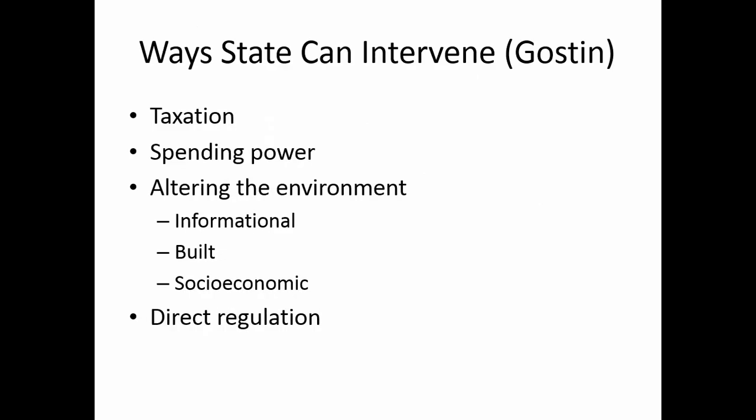Gostin has developed a taxonomy of ways in which the state can choose to intervene in attempting to protect and promote public health. These are useful in that we tend to think of public health law as being about direct regulation, which is last on this list. We will talk about direct regulation, but first we'll look at other methods government can choose to influence and promote the health of the population.